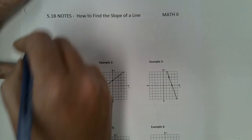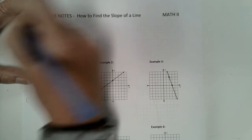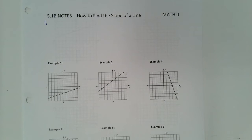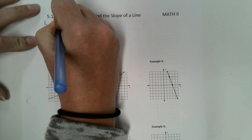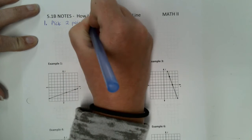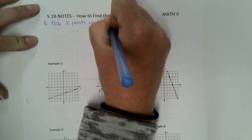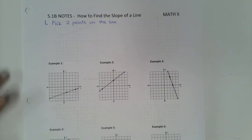I've got some steps for us. Steps are always good because if you get lost, you go back to the step that you just completed. So the first step is you are going to pick two points on the line. I'll tell you a little bit more about how you pick the points and make sure you pick the right points in a second. But that's your first step — you pick two points on your line.